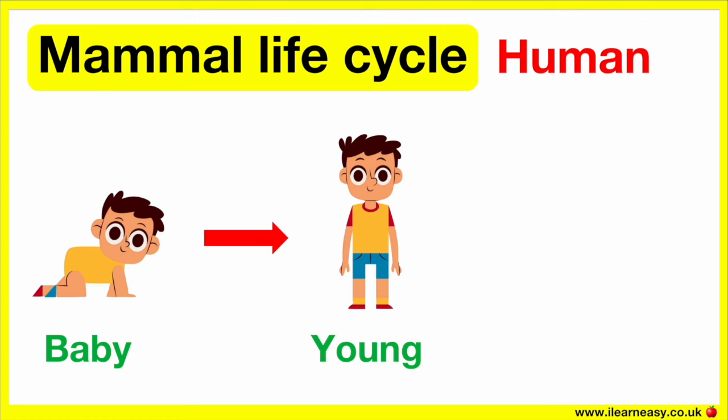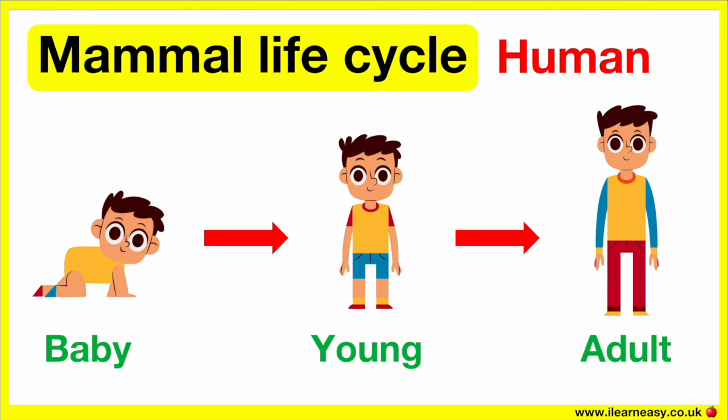During the next stage, the child grows bigger and gains independence. When a mammal becomes an adult, it's independent and can look after itself. As an adult, it can reproduce to continue the cycle.